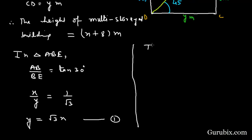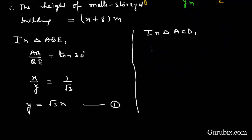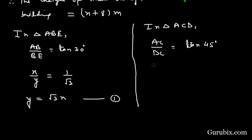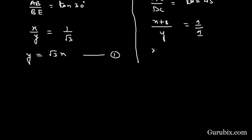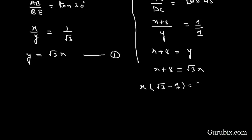Now we shall move to triangle ACD. In triangle ACD, we find the ratio of AC over CD, which equals tan(45°). AC is x plus 8, DC is y, and tan(45°) equals 1 over 1. So x plus 8 equals y. Substituting y equals root 3 times x, we get x plus 8 equals root 3 times x. This means root 3 minus 1 times x equals 8.